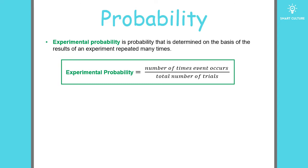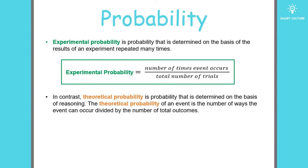So how is this different from theoretical probability? Theoretical probability is probability that is determined on the basis of reasoning. The theoretical probability of an event is the number of ways the event can occur divided by the number of total outcomes.